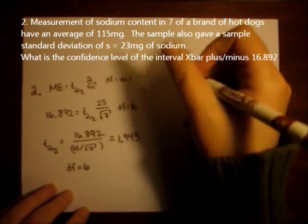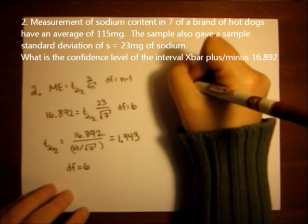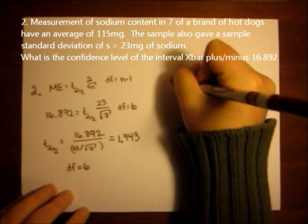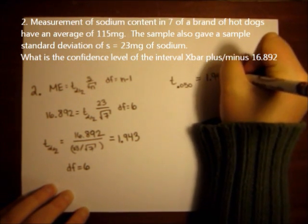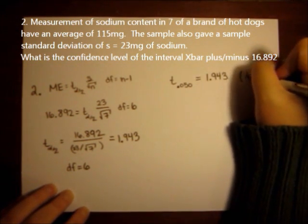So I see that, and it's in the column t.050. So I know t.050 equals 1.943 when degrees of freedom equals 6.